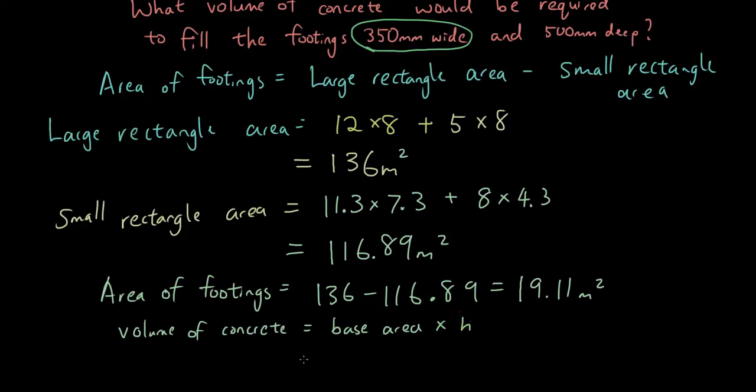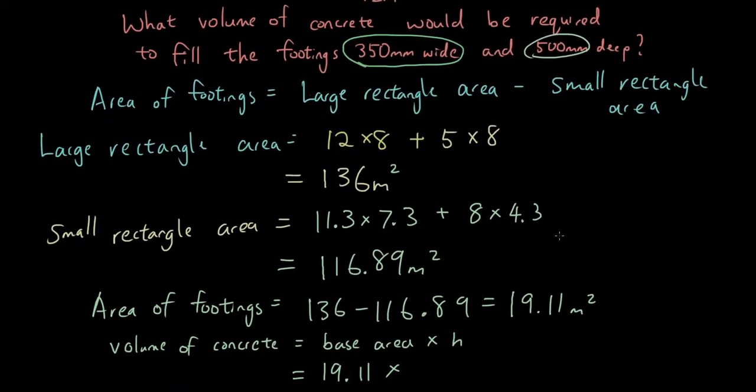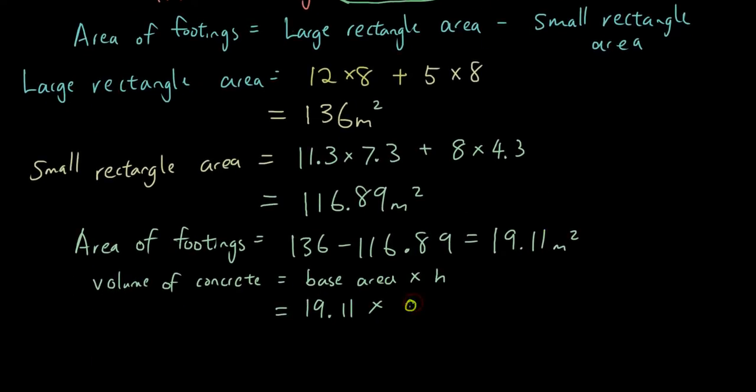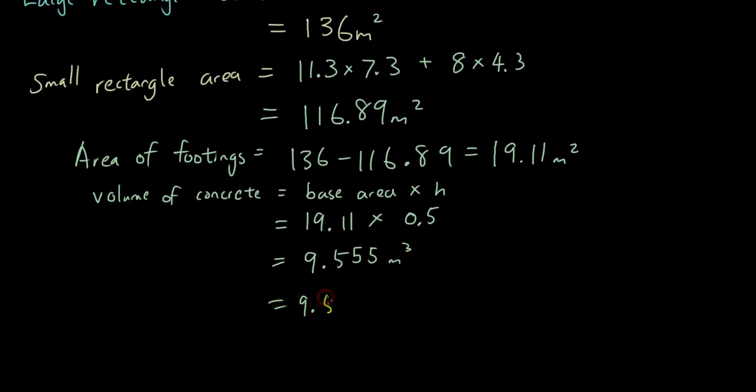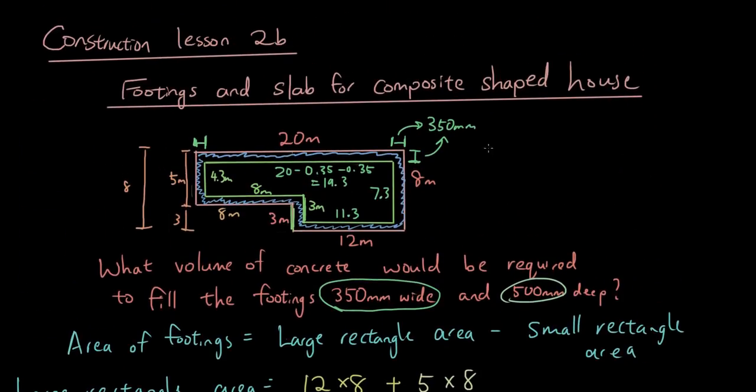It's base area times height. So the area of the footings is 19.11 times by the height of the footings or the depth of the trenches is 500 millimeters. Now 500 millimeters is going to be 0.5 meters. So now if you put all that in times by 0.5, you get 9.555 meters cubed. And you might be asked to round it. 9.56 meters cubed. Round it to two decimal places. So that's how you find the volume of concrete for a composite shaped house. Okay. Thanks for watching guys. See you next time.